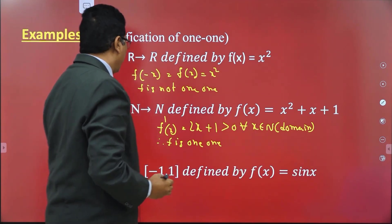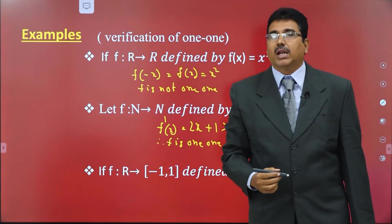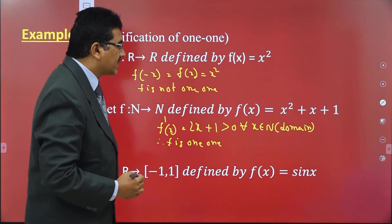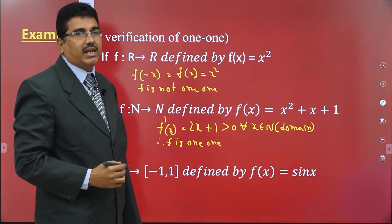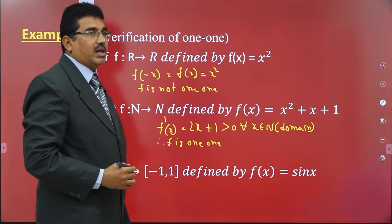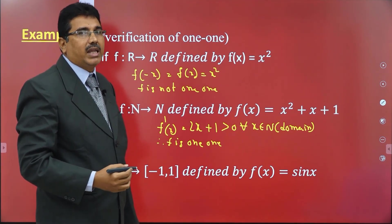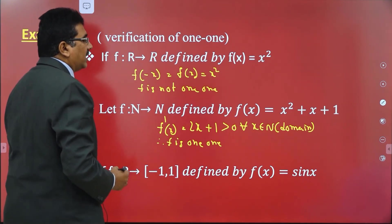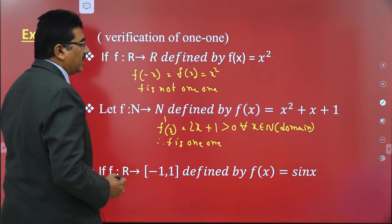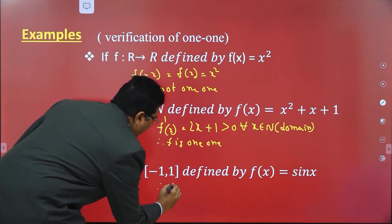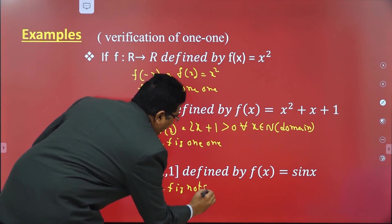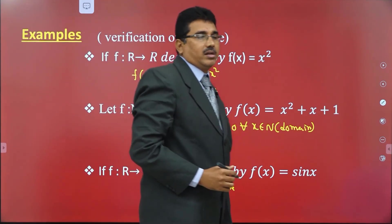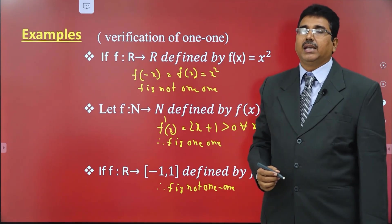Another example: F: R → [−1, 1] defined by f(x) = sin x. Since sin is a periodic function of period 2π, from the above note all periodic functions are many-one. Therefore f(x) = sin x is not a one-one function due to its periodic nature. Thank you. Let us see in the next session.